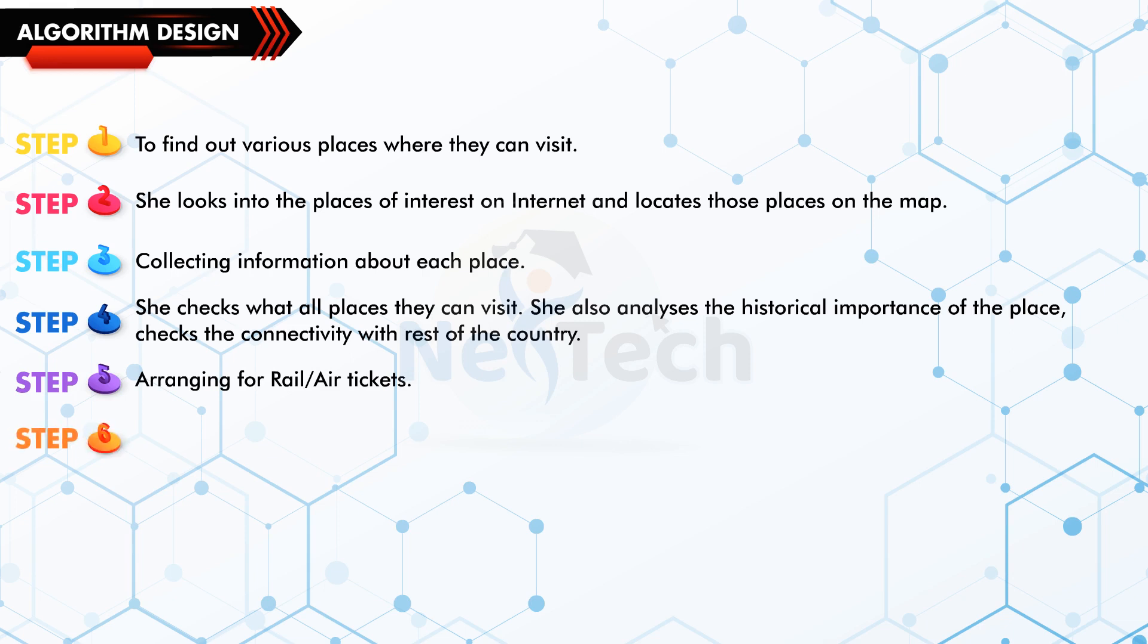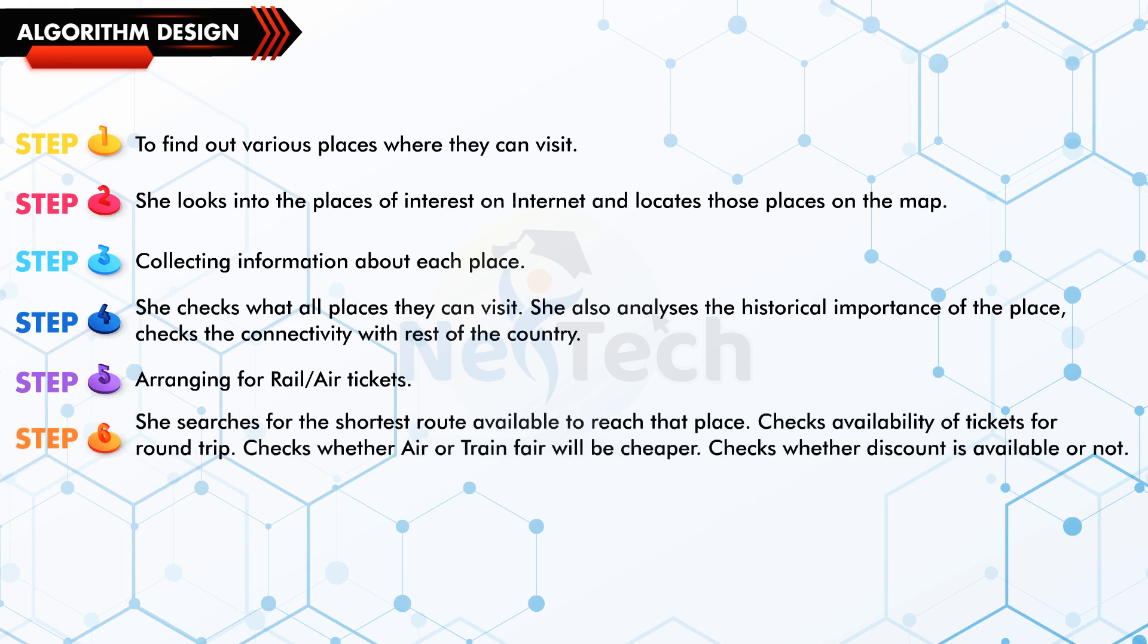Step 5: Arranging for rail or air tickets. Step 6: She searches for the shortest route available to reach that place. Checks availability of tickets for round trip. Checks whether air or train fare will be cheaper. Checks whether discount is available or not.